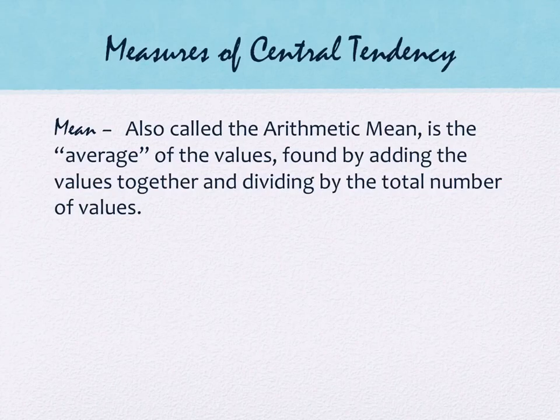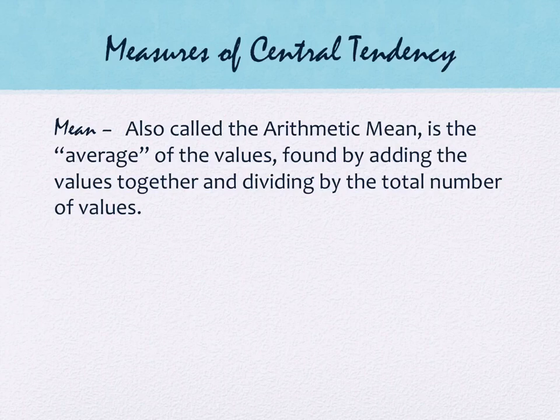The first measure of central tendency is the one you're probably most familiar with. It's called the mean, also called the arithmetic mean. This is the quote-unquote average. It's found by adding everything together and dividing by the number of values. So if you wanted to know the average cost of gas, you'd add all the prices together and divide by the number of gas stations. It's not super perfect when you consider homework versus tests because they're worth different amounts.